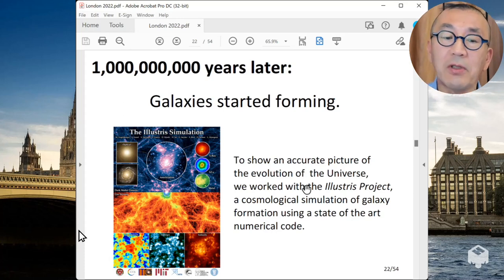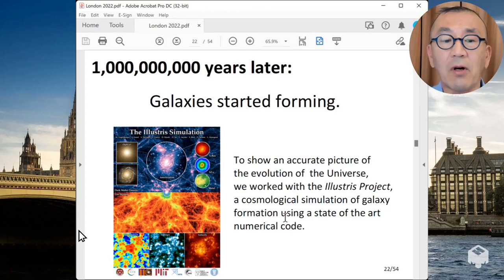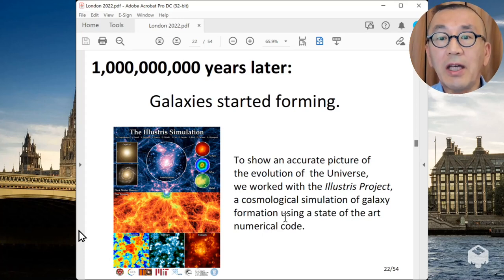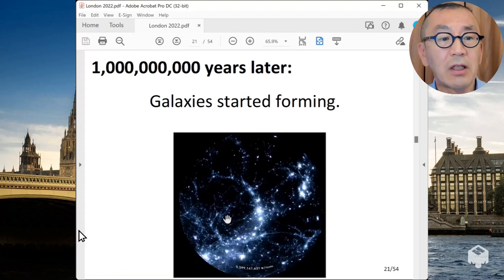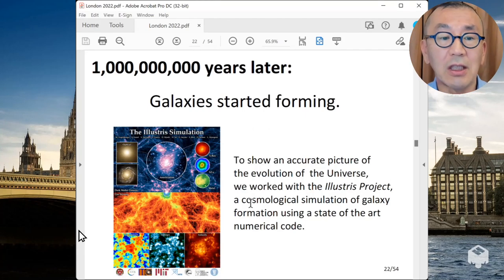When we made this movie, we collaborated with the Illustrious Project. It is actually the collaboration of Harvard University, MIT and many other universities, about cosmological simulation of galaxy formations using the state-of-the-art numerical code. And we have been able to get their help to translate their scientific model into the movie images. So that's what you'll see in the movie.